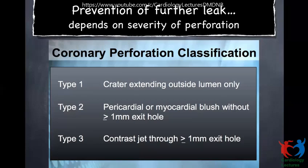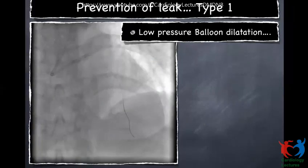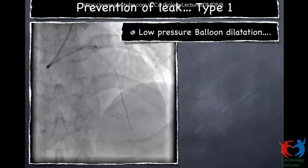Regarding the classification: Type 1 is a crater extending outside the lumen with contrast not going into the pericardium. Type 2 is contrast going into the pericardium, but it's not a free flow. And Type 3, you have a jet going into the pericardium, which is more dangerous.